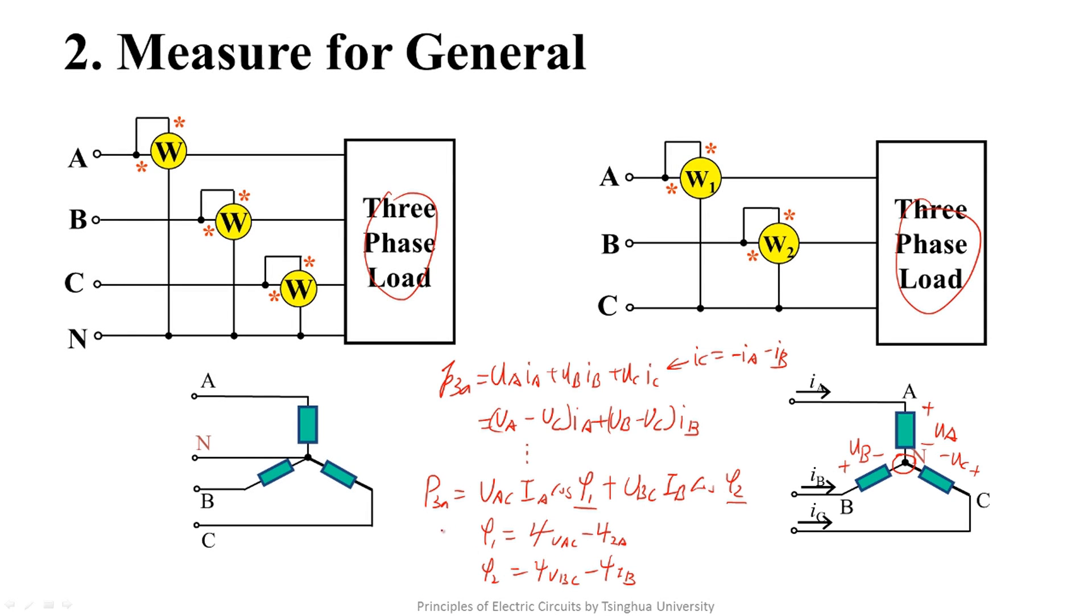From the expression, we know two parameters are needed. For one parameter, its voltage port is used to measure UAC and its current port is used to measure IA. Its reading is the first part of the power. The connection is based on this expression.